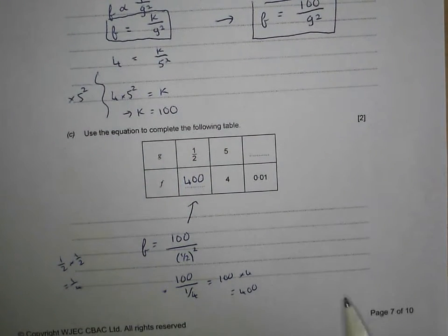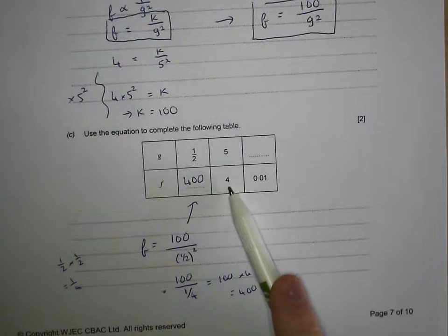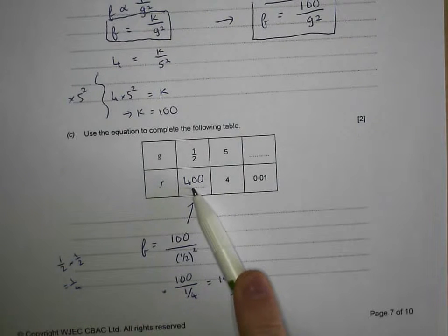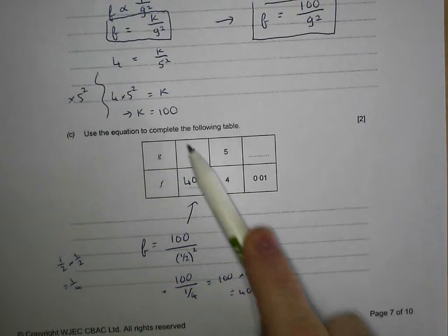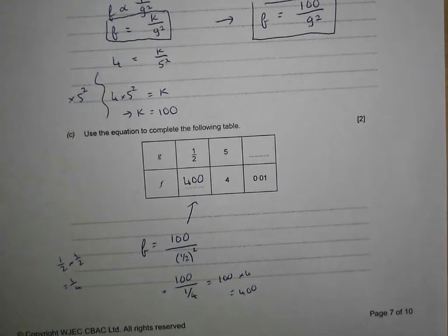Notice here the inverse proportion. f has gone up from 4 to 400, g has gone down from 5 to 1 half. Inverse proportion.